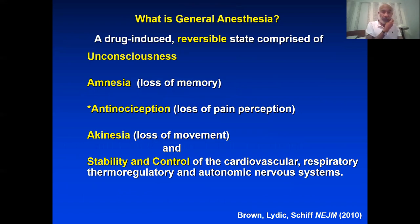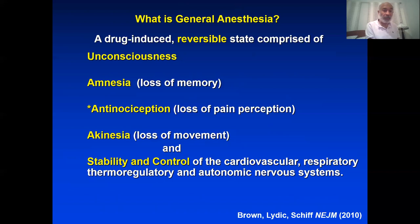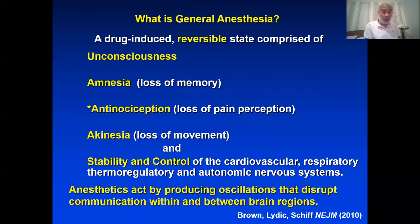General anesthesia is a drug-induced reversible state comprised of unconsciousness, amnesia, and antinociception, in which we maintain stability and control of the physiological systems. Unconscious means you're not aware of what's going on; amnesia means there's no memory of what's happening; antinociception means there's no perception or processing of nociceptive or harmful information. It's key that it be reversible. One of the ways anesthetics work is by creating very powerful oscillations that disrupt the ability of different parts of the brain to communicate — hence the need for reliable spectral methods.